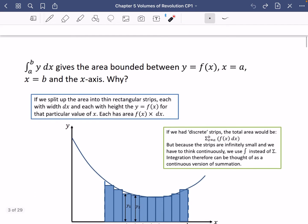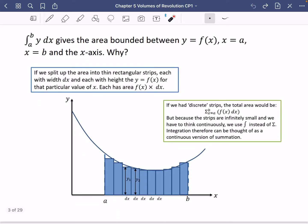Well, let's talk through what I've got written on this next slide here. So what I've said inside this blue box is that if we split up the area into thin rectangular strips, each with width dx and with the height y, which is f of x. All of these heights vary as you move across the function, so the y is f of x for that particular value of x. That's why they're varying. Each of these strips have an area of f of x multiplied by dx.